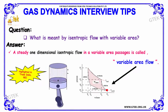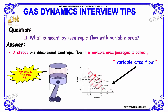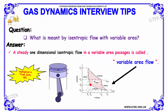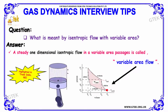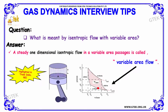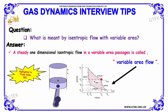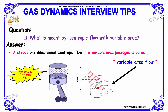What is meant by isentropic flow with variable area? A steady one-dimensional isentropic flow in a variable area passage is said to be called as variable area flow — that is, isentropic flow with variable area.